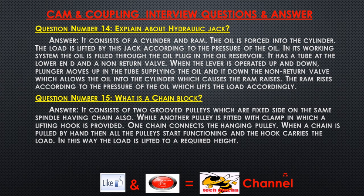Question number fifteen: What is a chain block? Answer: It consists of two grooved pulleys which are fixed side by side on the same spindle, having a chain. Another pulley is fitted with a clamp in which a lifting hook is provided. One chain connects the hanging pulley. When the chain is pulled by hand, all the pulleys start functioning and the hook carries the load. In this way the load is lifted to a required height.